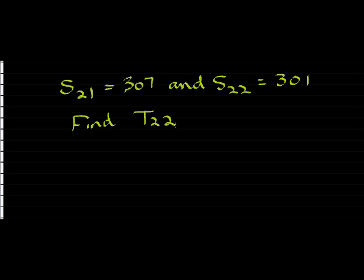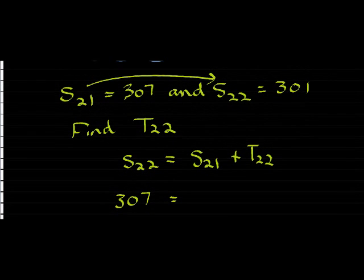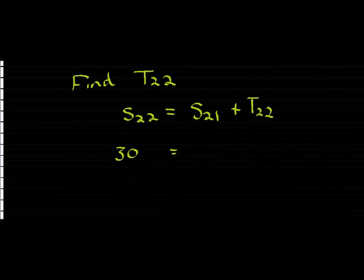How did I go from this term to that term? S22 I get by adding the first 22 terms, which means I've added the first 21 and the 22nd term. And therefore I simply say, oh but I know these values. S22 is 301, S21 is 307. And I simply solve the equation.